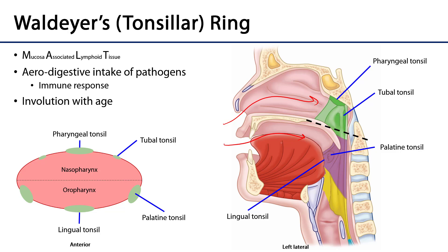The several tonsils located throughout the pharynx include the pharyngeal tonsil at the roof of the nasopharynx. The pharyngeal tonsil is oftentimes referred to as the adenoid. The adenoid is probably at its greatest size around five years of age, and it tends to involute — getting smaller and acquiescing into the wall of the nasopharynx — during late adolescence.